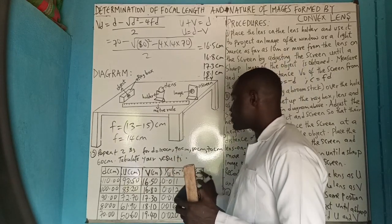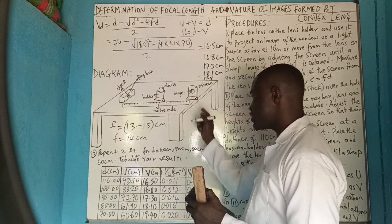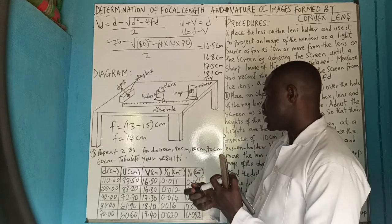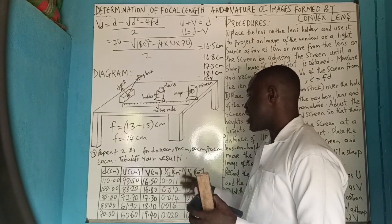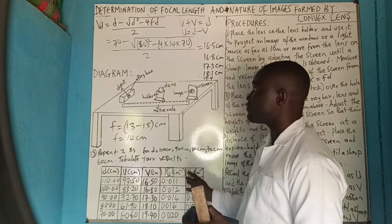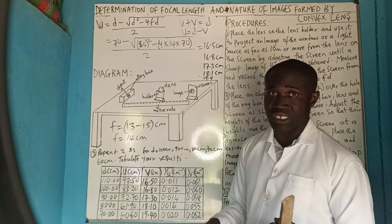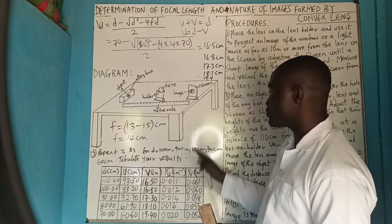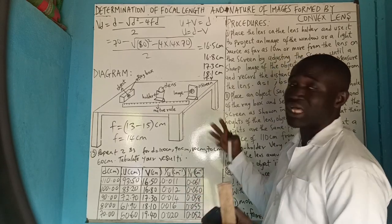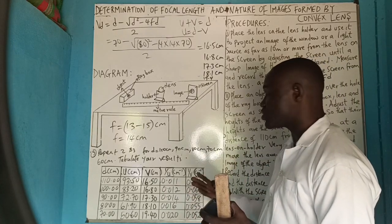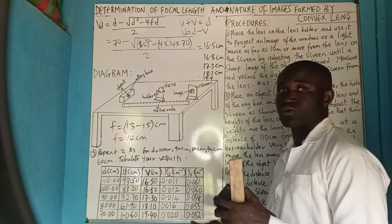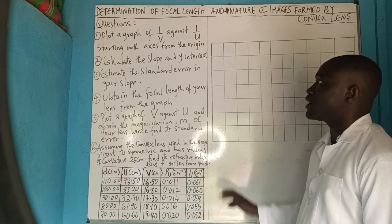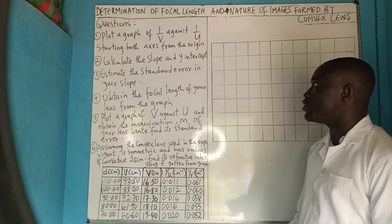We have now obtained our complete table of values for the experiment. We want to proceed to graph plotting to see how to plot the graph, and examine the questions that follow it — specifically how to do the graph, what additional questions are asked, and how to answer them.